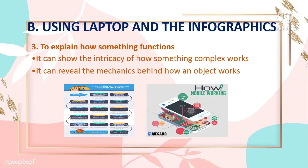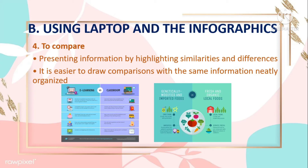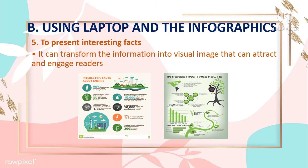Third, to explain how something functions: using infographics, you can show the intricacy of how something complex works and reveal the mechanics behind how an object functions. Designers can create infographics showing the mechanics behind intricate objects, processes, and concepts. Fourth, to compare: presenting information by highlighting similarities and differences through a visual parallel in an infographic can be more effective than expressing it in words. Fifth, to present interesting facts: when information is presented all in words, infographics can bring it to life by transforming it into a visual image that attracts and engages readers.